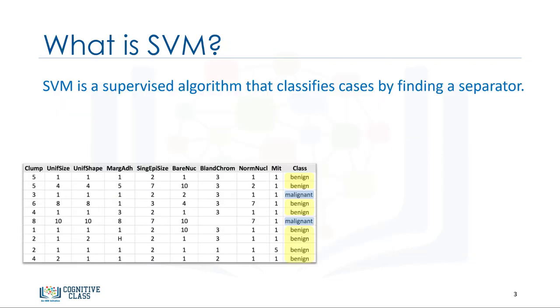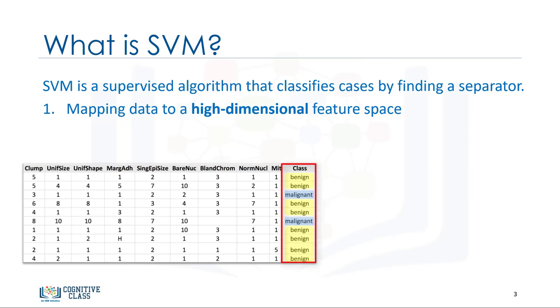Now, let me give you a formal definition of SVM. A Support Vector Machine is a supervised algorithm that can classify cases by finding a separator. SVM works by first mapping data to a high-dimensional feature space so that data points can be categorized, even when the data are not otherwise linearly separable. Then, a separator is estimated for the data.